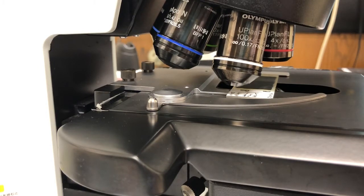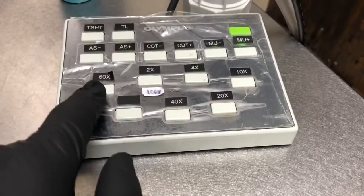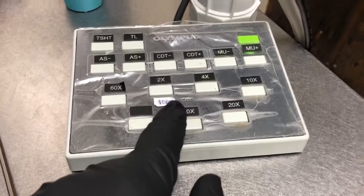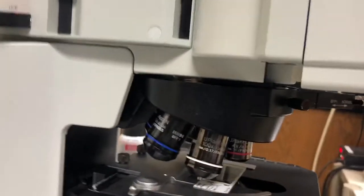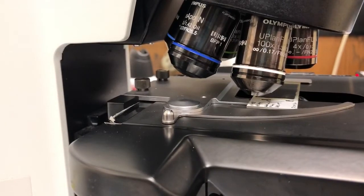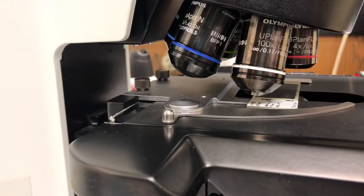The first thing you need to do is check if the oil objectives are actually on the microscope. To do that you can go to the 60x or 100x position or just look on the microscope itself and see if you can identify the 60x and 100x objectives if you need one of those two.